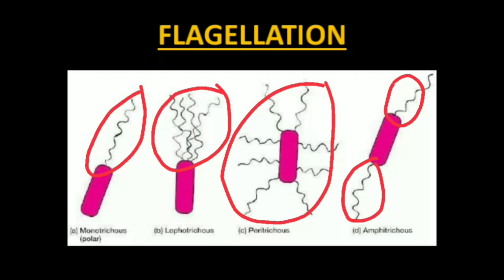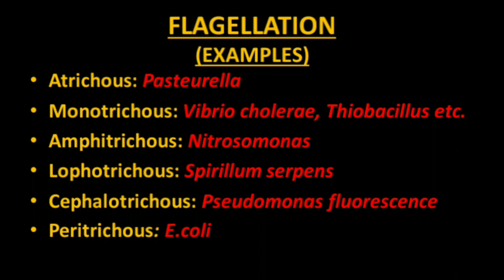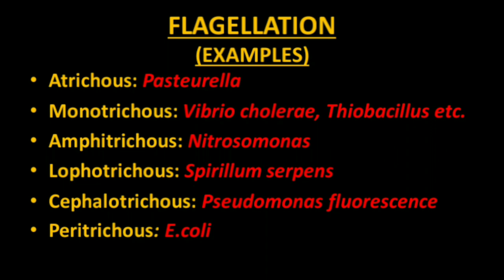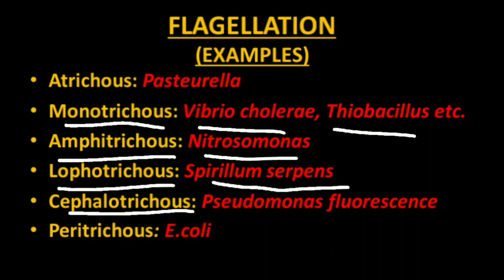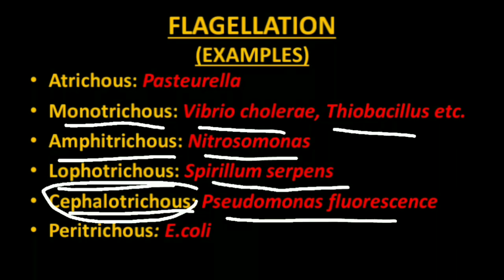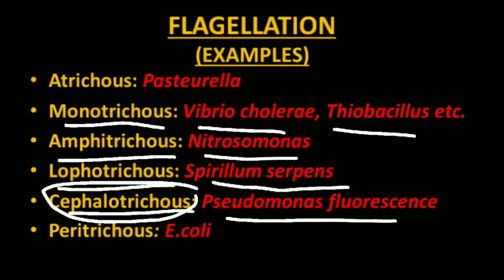Examples of flagellation types: atrichous (no flagella) — Pasteurella; monotrichous — Vibrio cholerae, Thiobacillus; amphitrichous — Nitrosomonas; lophotrichous — Spirillum serpens; cephalotrichous — Pseudomonas fluorescens; peritrichous — E. coli. What kind of flagellation is cephalotrichous? That is your homework — please go through your book or internet to find the answer.